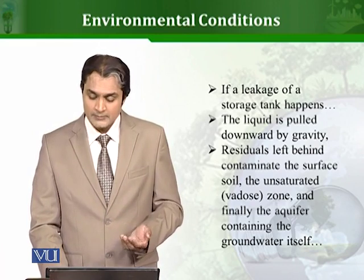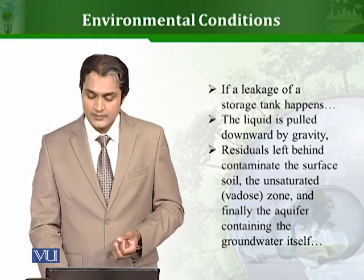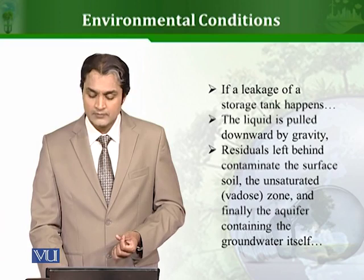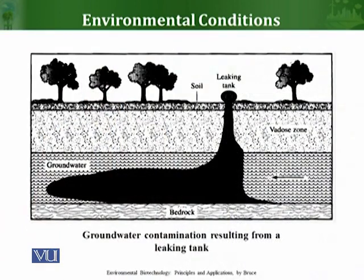It will contaminate the surface soil, the unsaturated zone, and finally the aquifer containing the ground water itself. As you can see in this sketch, this is the leaking tank and it will find its way ultimately to the ground water.